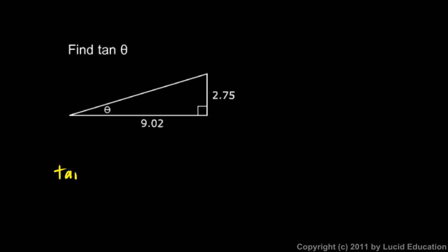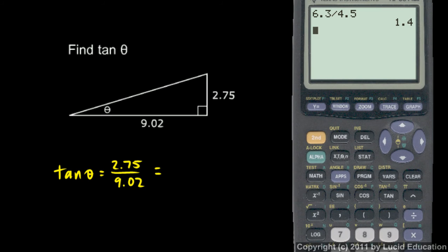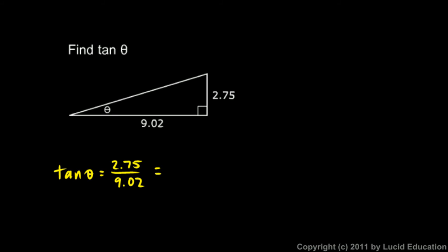So the tangent of theta is 2.75 divided by 9.02. And I certainly can't do that in my head, so let's pull up the calculator again. 2.75 divided by 9.02, and hit enter, and we get 0.3048780488. Okay, that gives us a lot of digits. I'm going to round the answer to 0.305. I'm going to say the tangent of theta here is 0.305.